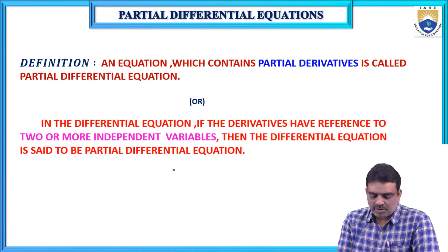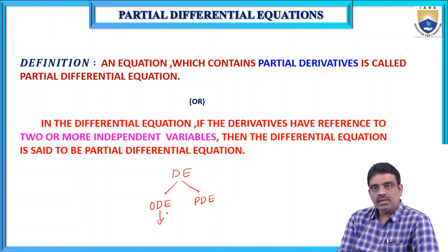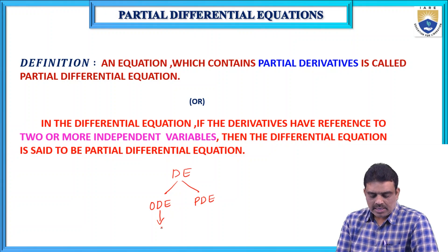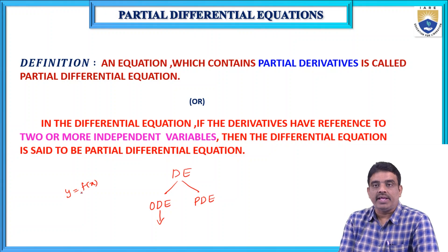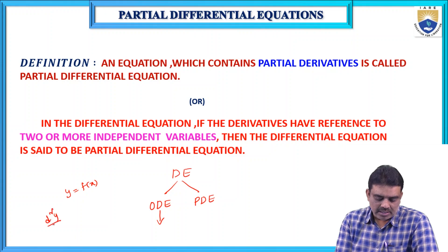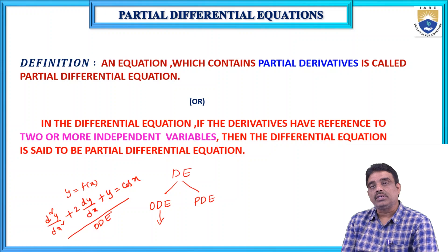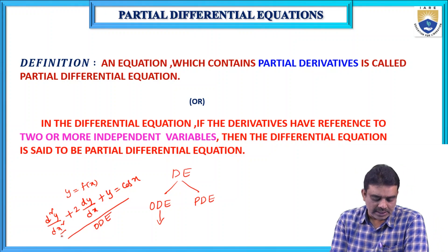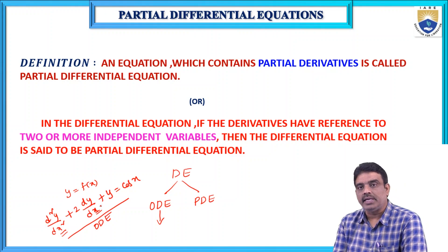Differential equations can be classified into two types: ordinary differential equations and partial differential equations. An ordinary differential equation is one where the derivatives have reference to a single independent variable. For example, if y = f(x), the equation d²y/dx² + 2 dy/dx + y = cos x is an ordinary differential equation, since all derivatives are with reference to x only.